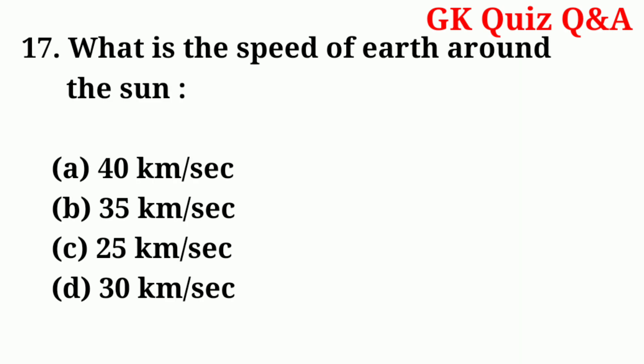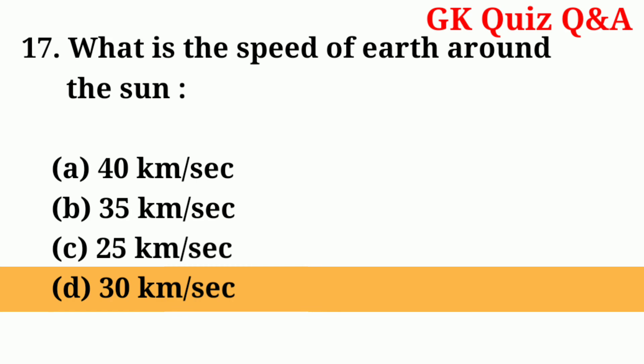Number seventeen: what is the speed of Earth around the sun? Answer: number D — 30 kilometres per second.